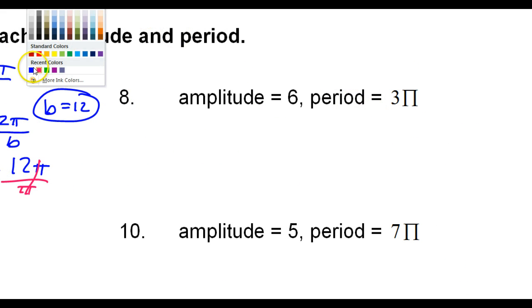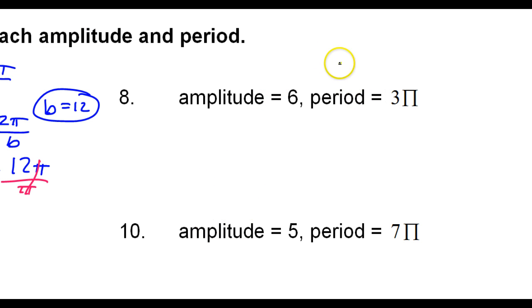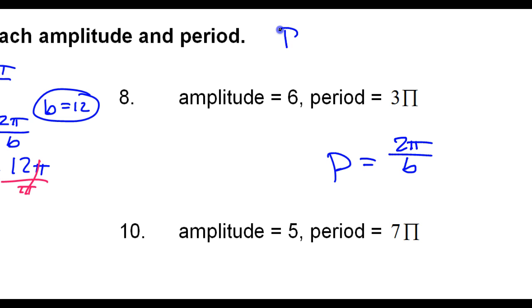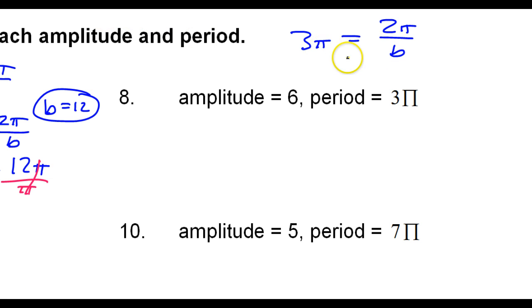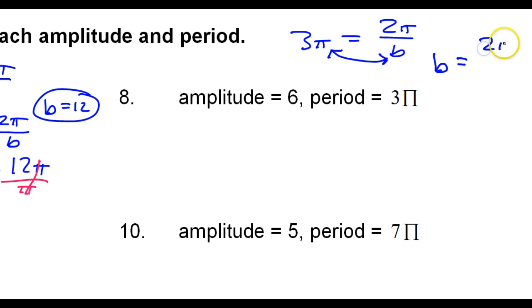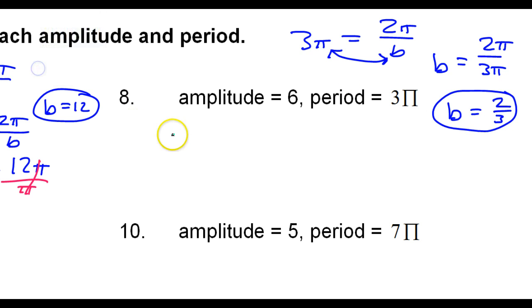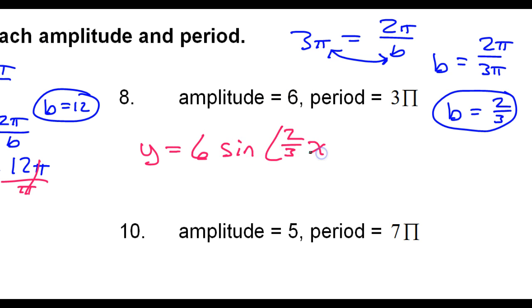Number 8. The period is 2 pi over b. The period is 3 pi, so 3 pi is equal to 2 pi over b. It's convenient to swap the denominator with 3 pi, so I immediately get b is equal to 2 pi over 3 pi. The pi's cancel, giving b equals 2 thirds. So y is equal to 6 sine of 2 thirds x.